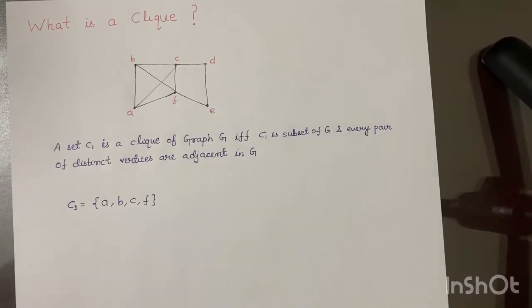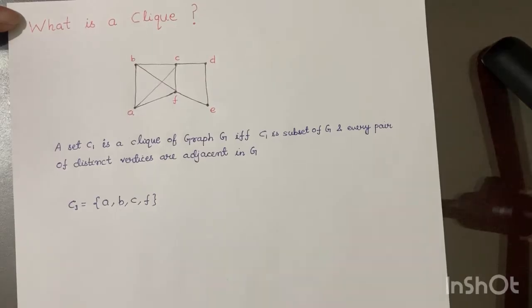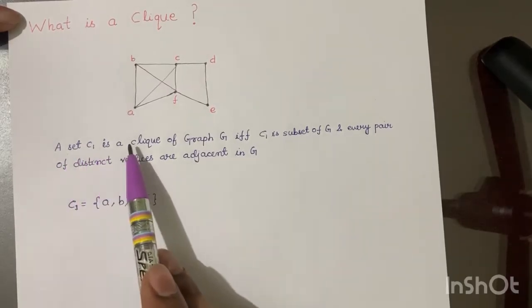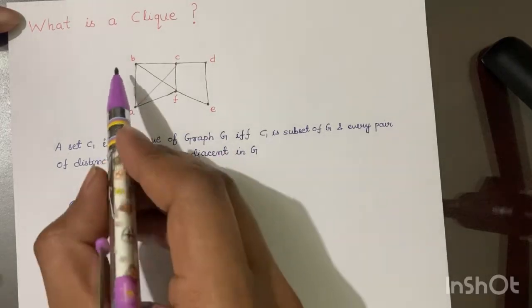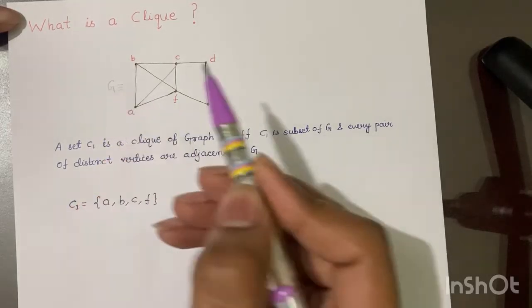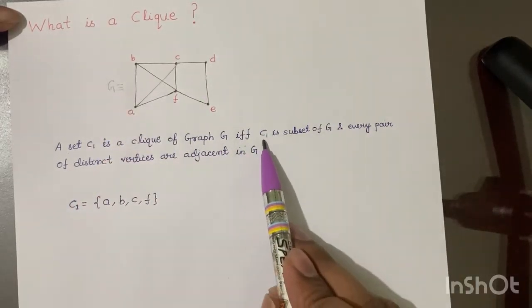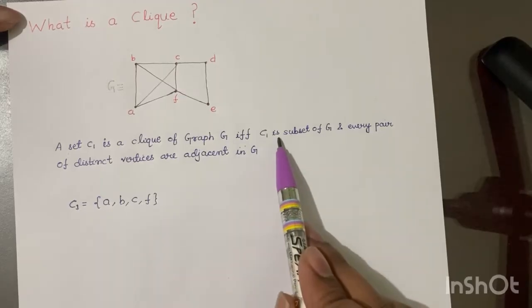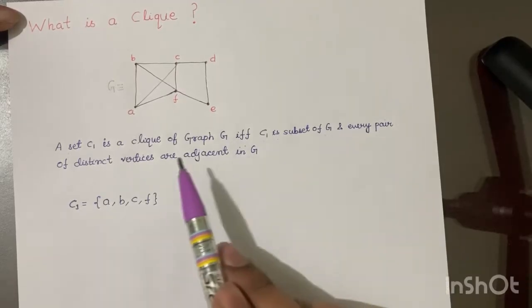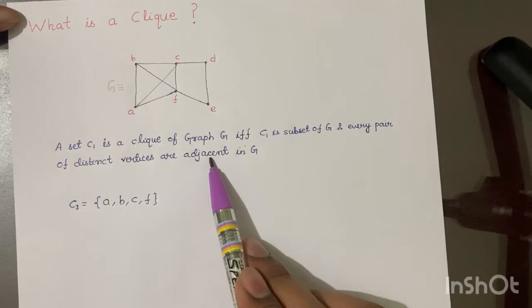So today we'll be looking at one of the most important topics in graph theory, that is clique. So the question here is what is a clique? There are a lot of definitions on clique, but the simplest one is: a set C1 is a clique of graph G if and only if C1 is a subset of G and every pair of distinct vertices are adjacent in G.